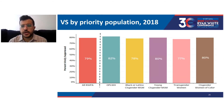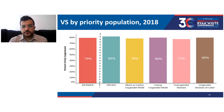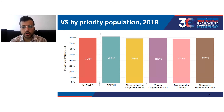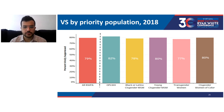We can also summarize viral suppression among the priority populations across all New York City Ryan White Part A clients for 2018, comparing them to the Ryan White Part A-wide viral suppression of 79%. Viral suppression percentages among priority populations were all roughly around the overall viral suppression. Older people living with HIV, young cisgender MSM, and cisgender women of color showed higher viral suppression compared to all Ryan White Part A clients, while Black or Latino cisgender MSM and transgender women had lower viral suppression compared to all Ryan White Part A clients.